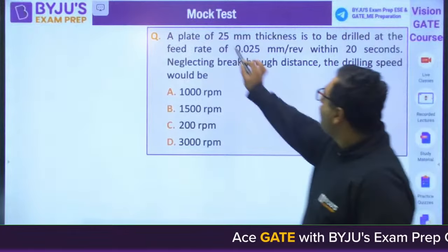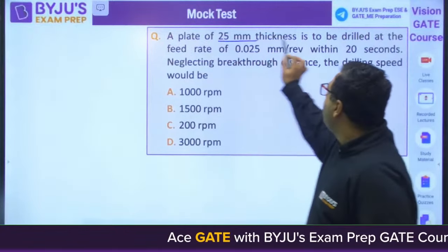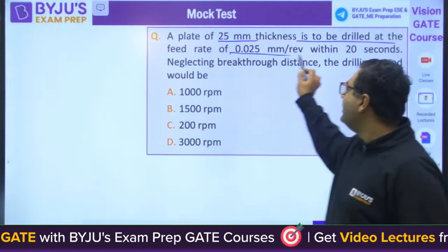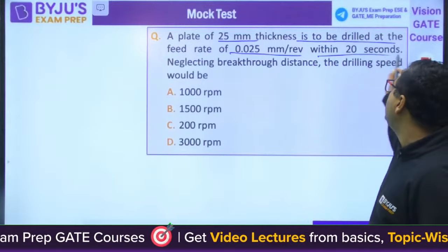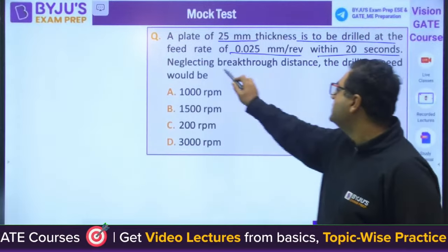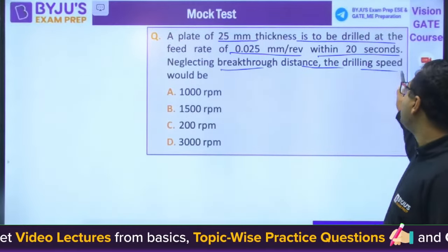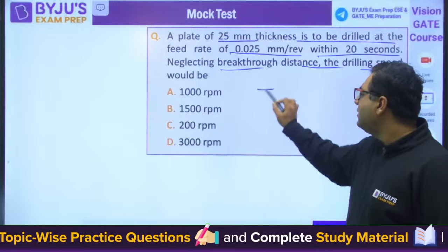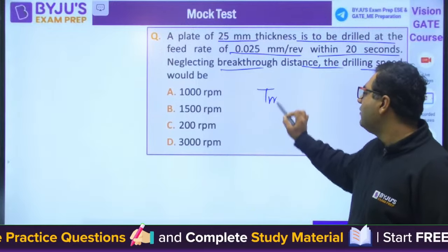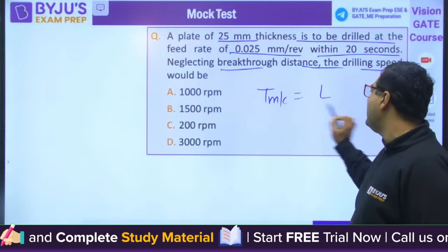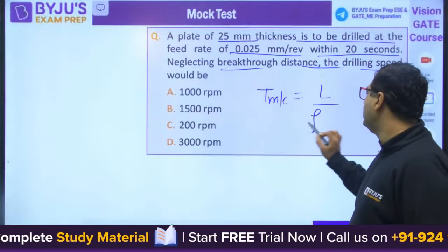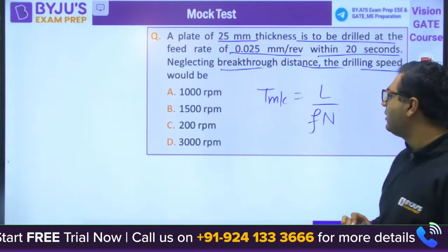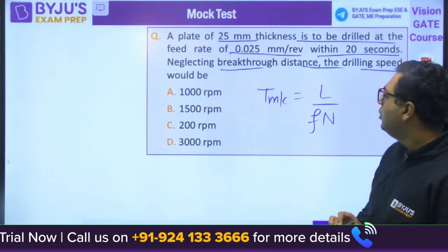Drilling speed question: a plate 25 mm thick is to be drilled at a feed rate of 0.025 mm/rev within 20 seconds, neglecting breakthrough distance. Using machining time formula T = L/(f·N), you need to find N. The answer comes out to be 3000 RPM.